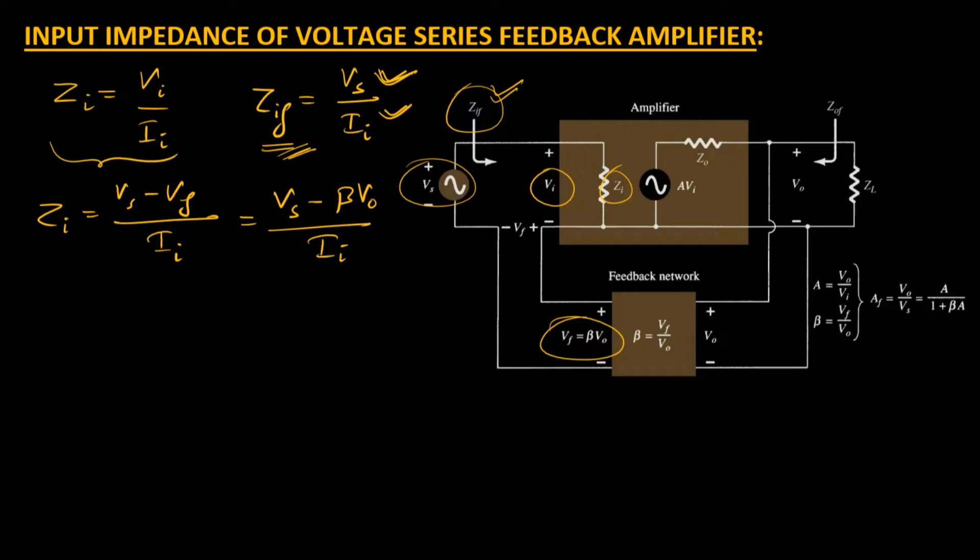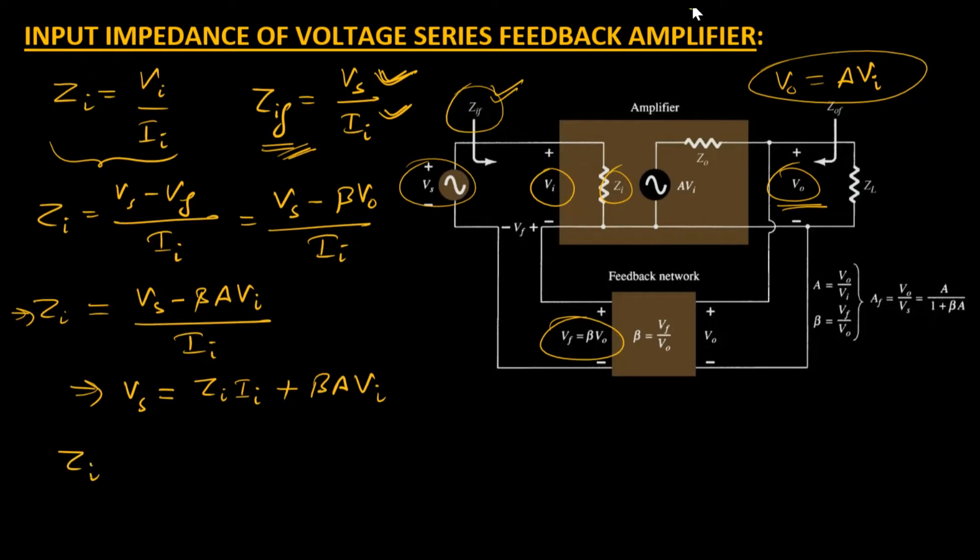Since we're calculating a parameter on the input side, I'll substitute V0 with an input parameter. V0 equals A·Vi, where A is the gain of the amplifier and Vi is the voltage being subjected to it. So Zi becomes Vs minus beta·A·Vi over Ii. We can easily calculate Vs from this equation, so Vs equals Zi·Ii plus beta·A·Vi.